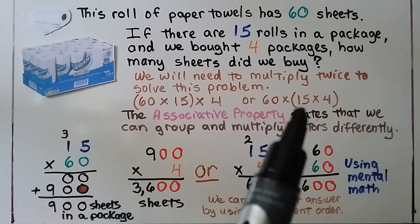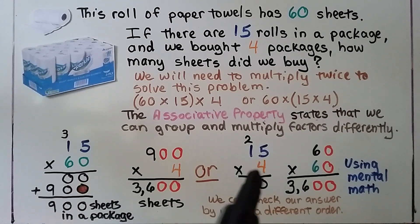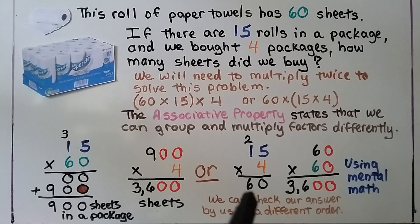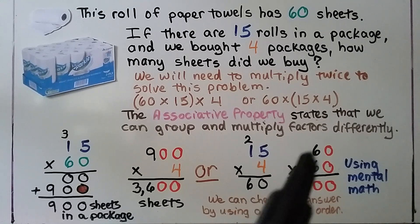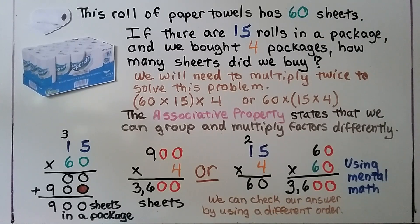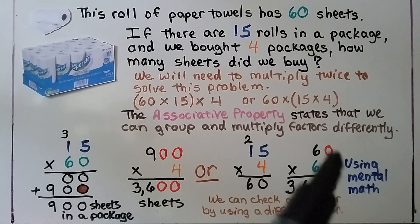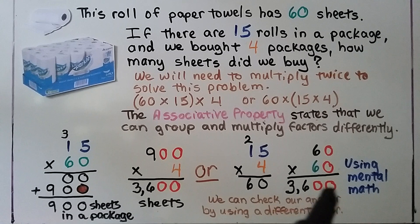We could also start with 15 times 4, which gives 60. Then multiply 60 rolls times 60 sheets using mental math. The basic fact 6 times 6 is 36, and with two zeros in the factors, we have two zeros in the product — 3,600. We can even check our answer by using a different multiplication order.